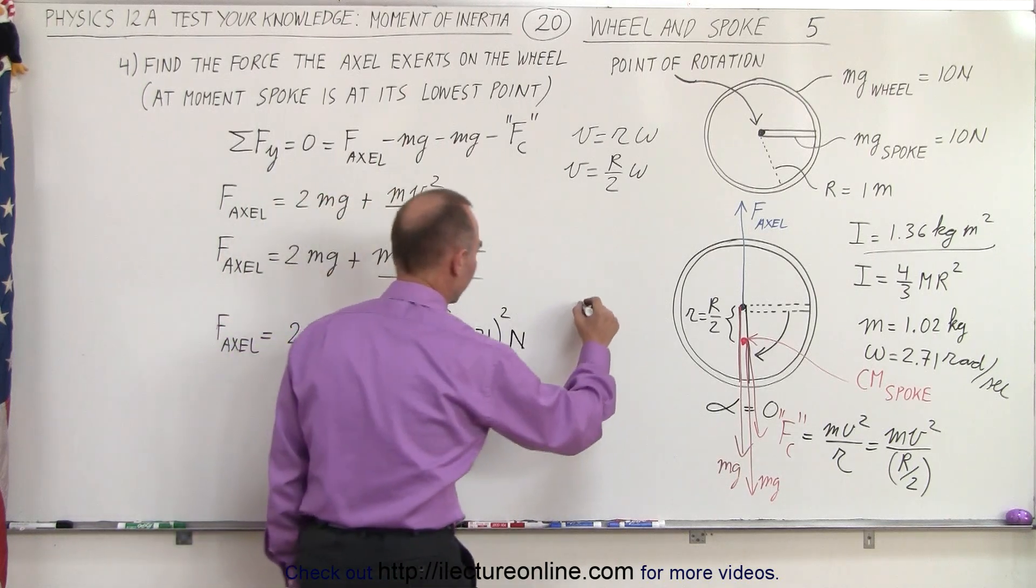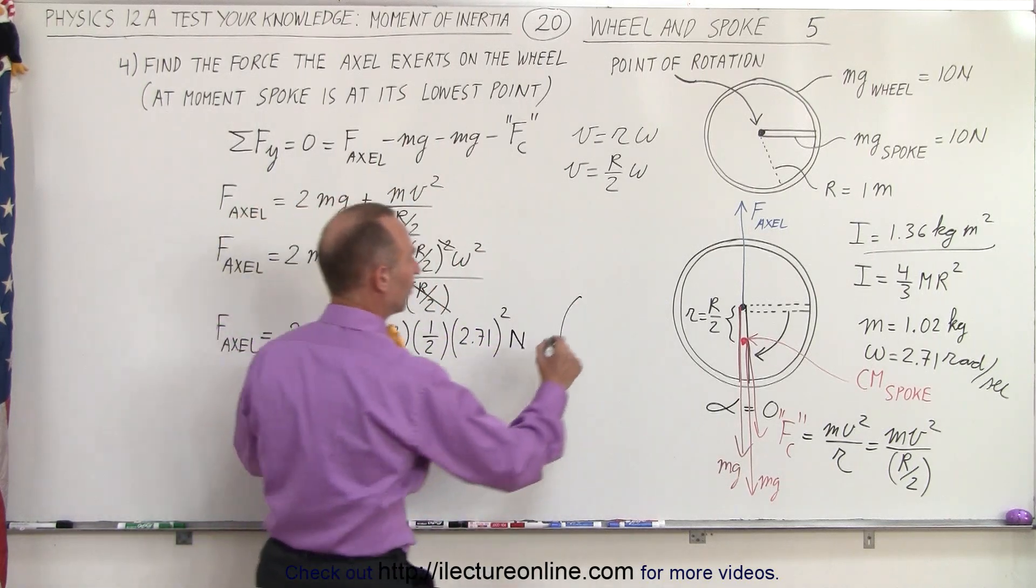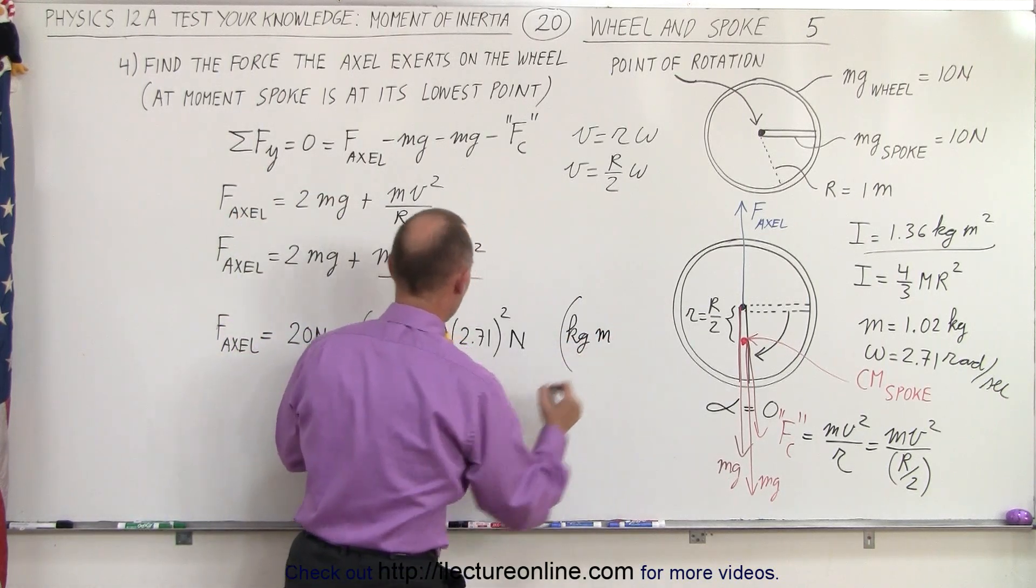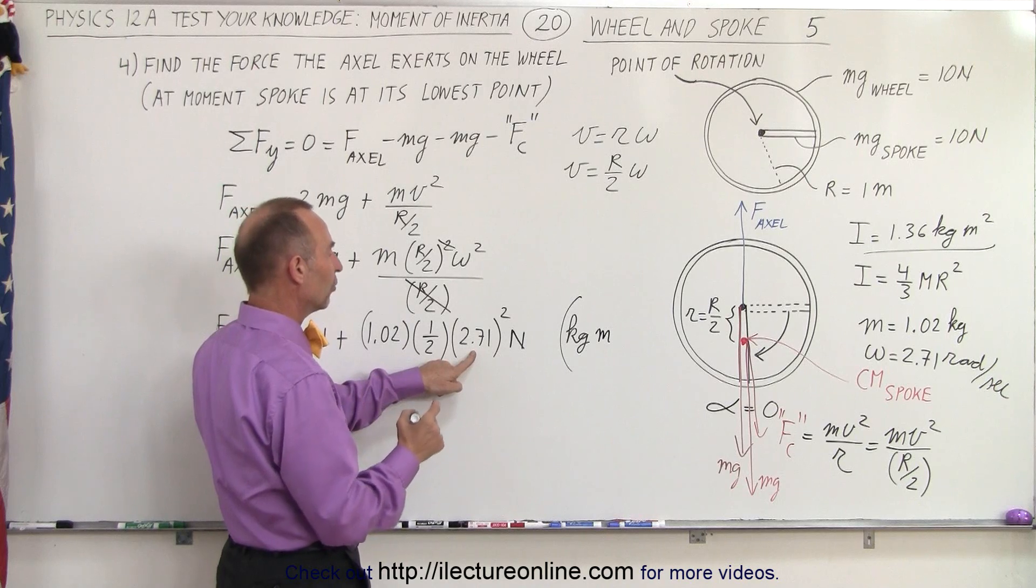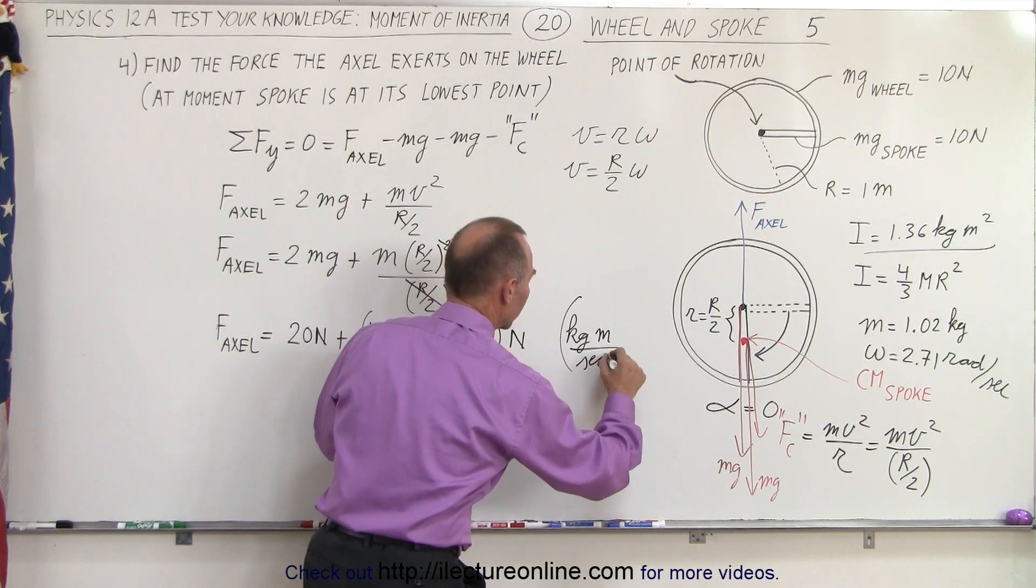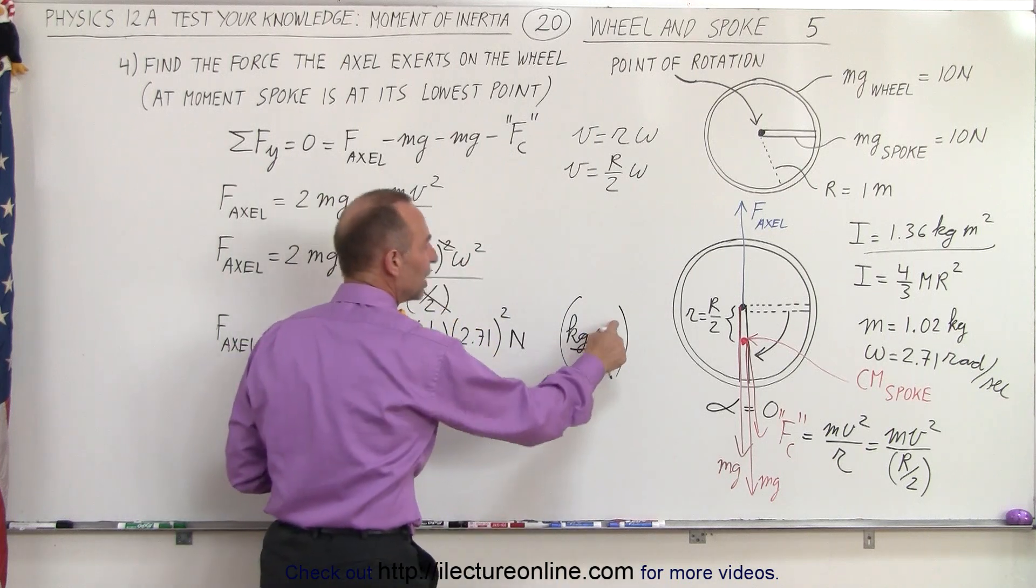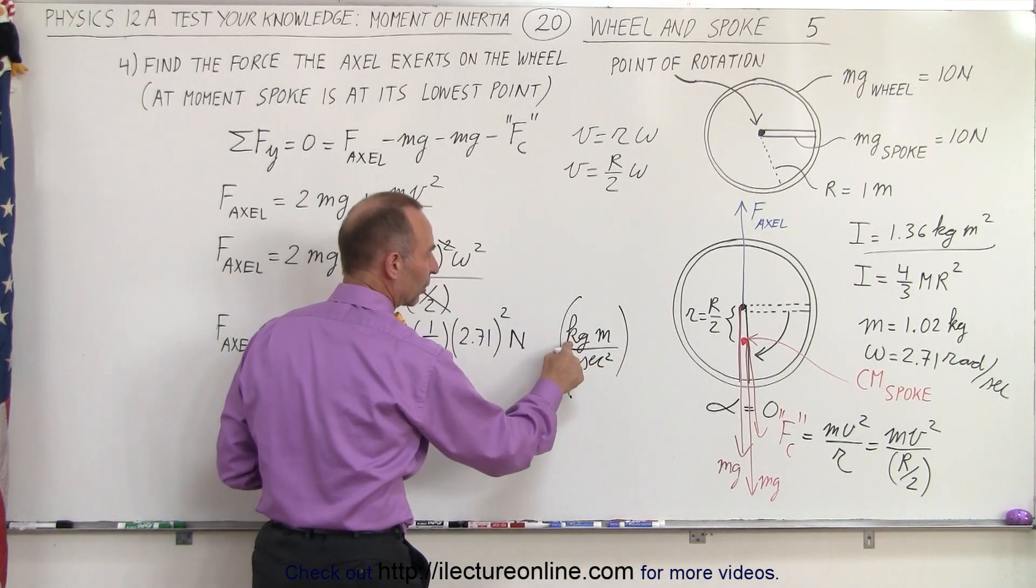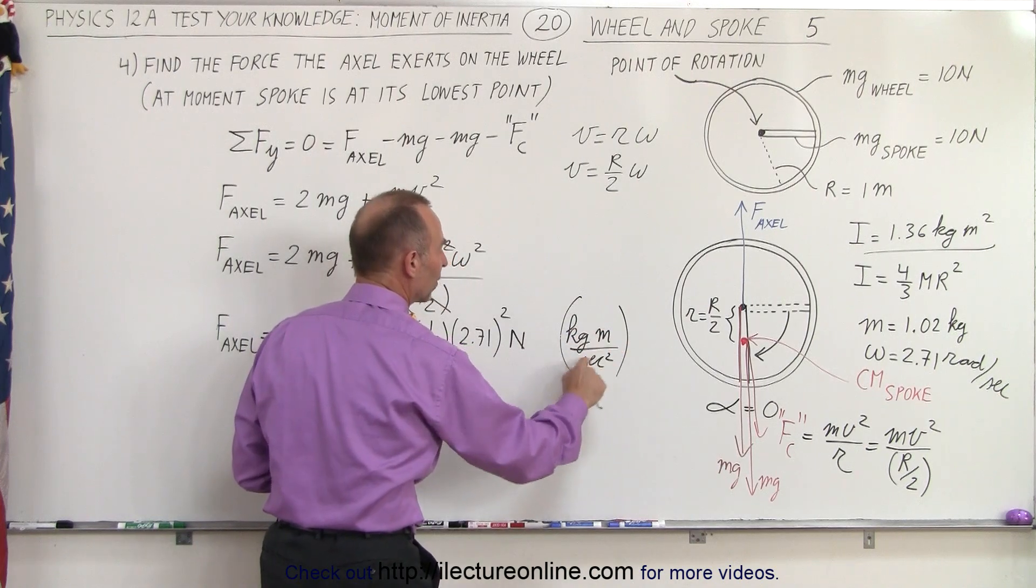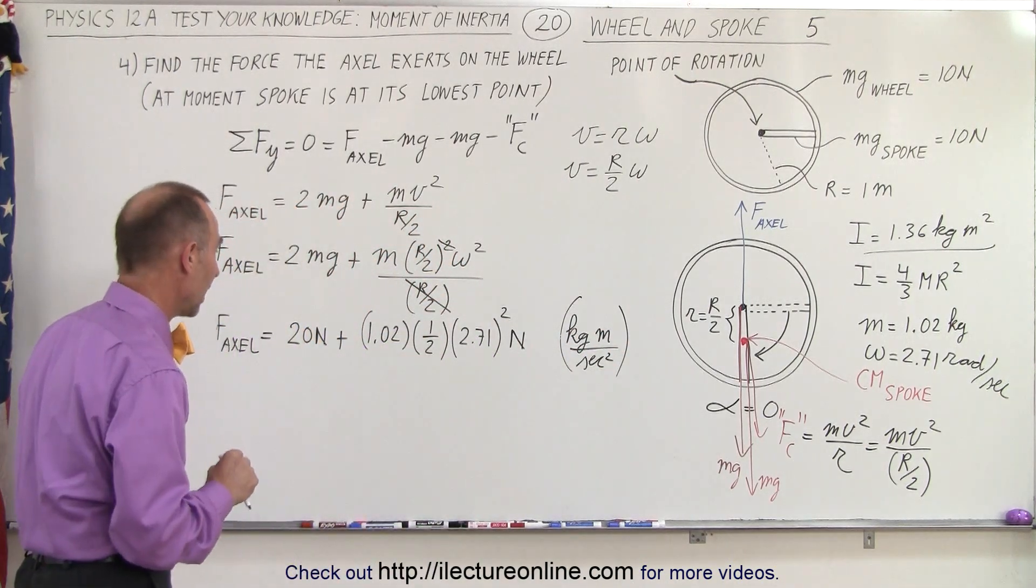Now, unit-wise, we know it's going to be newtons, but let's see if that works out. On this side we have kilograms, meters, and radians per second squared. Notice that meters per second squared is acceleration. Kilogram is mass. Mass times acceleration gives you newtons. Kilogram meters per second squared is indeed newtons, so the units come out.